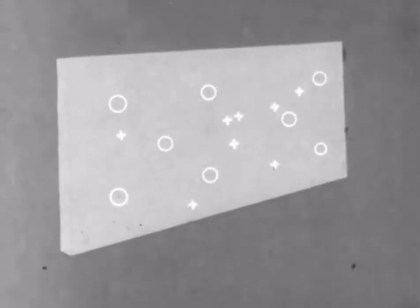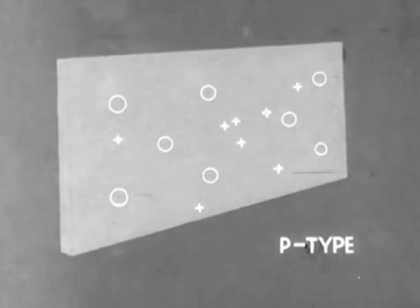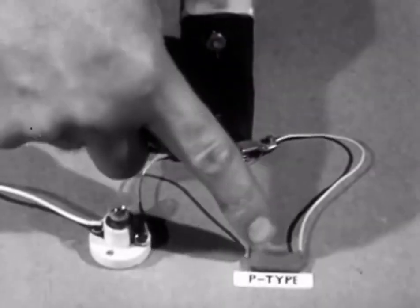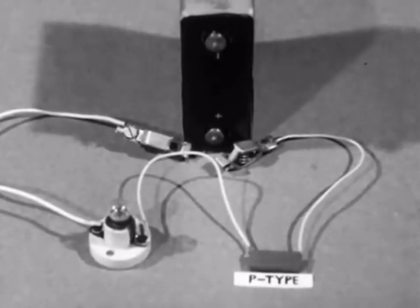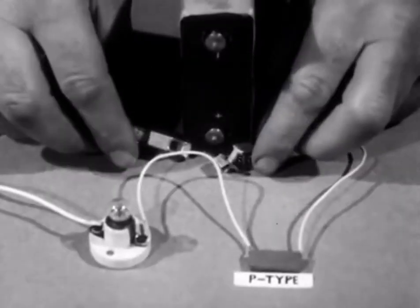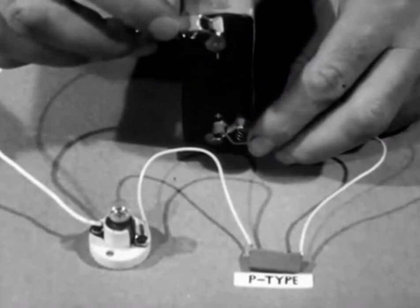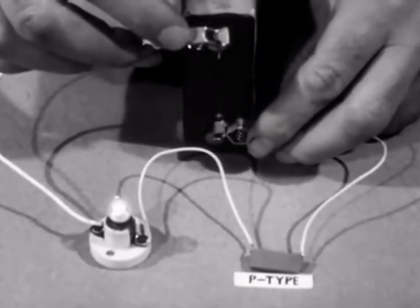A semiconductor like this is known as p-type, p for positive carrier. The impurity atoms, because they try to collect electrons, are known as acceptor atoms. Here is a piece of p-type germanium. It looks like ordinary germanium, and current will flow through it in either direction as with the n-type germanium.